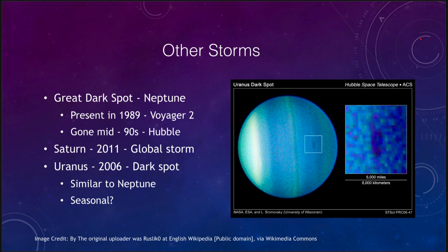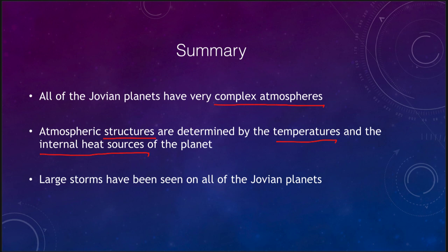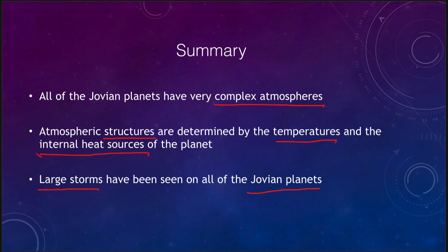To summarize: all of the Jovian planets have complex atmospheres with a lot going on at various temperatures and structures. The structures we see are determined by temperatures and the internal heat sources of the planet — the likely reason Uranus has very little atmospheric structure is its lack of an internal heat source. We've also talked about large storms seen on all of the Jovian planets to differing extents: from the Great Red Spot on Jupiter observed for hundreds of years, to the Great Dark Spot on Neptune, to smaller storms on Saturn and Uranus. That concludes our lecture on the atmospheres of the giant planets.